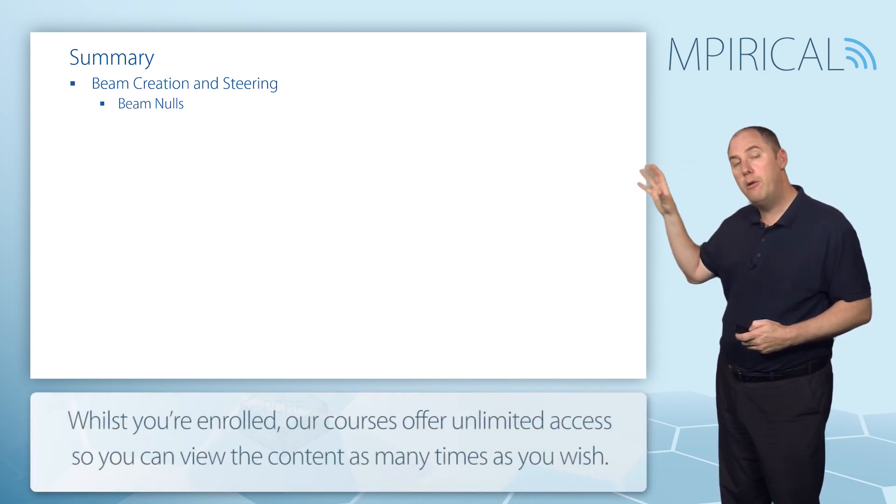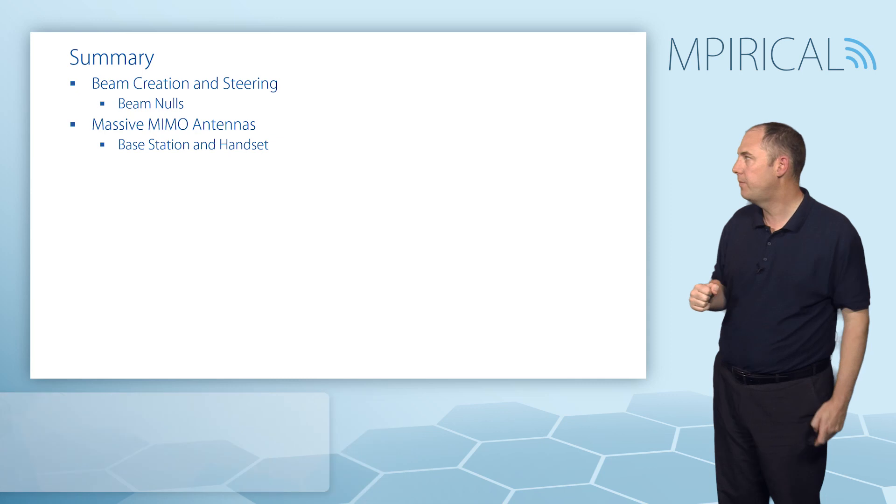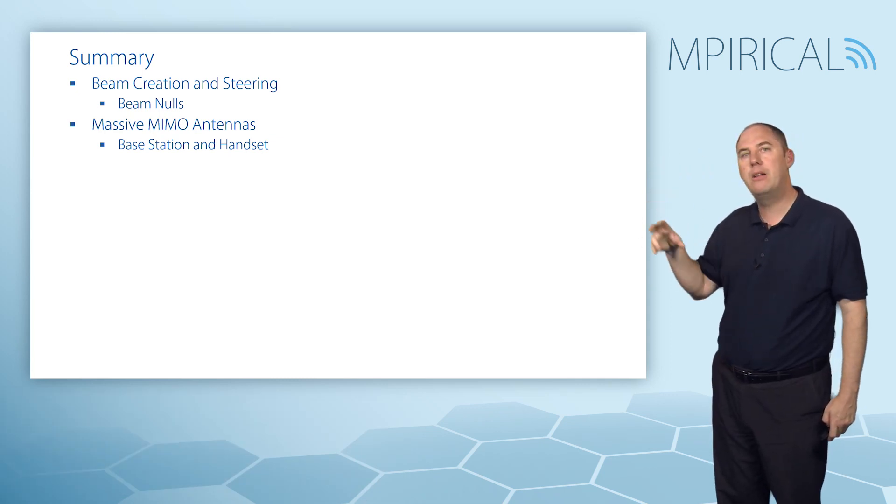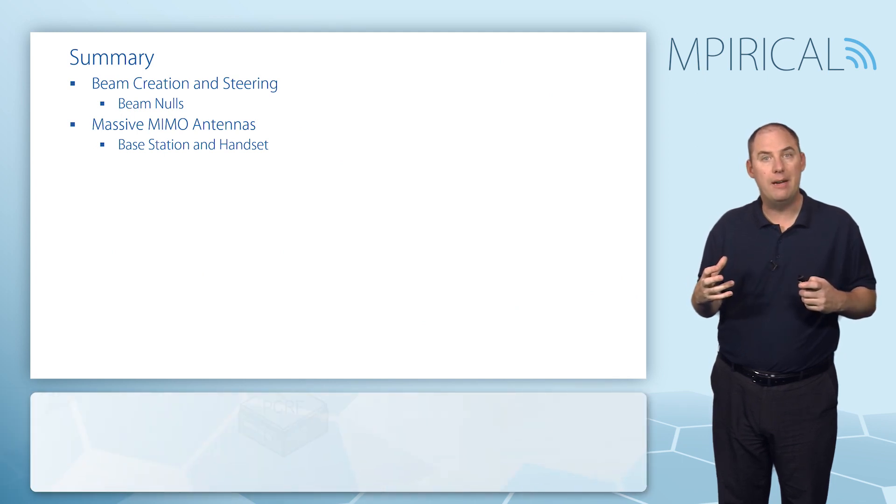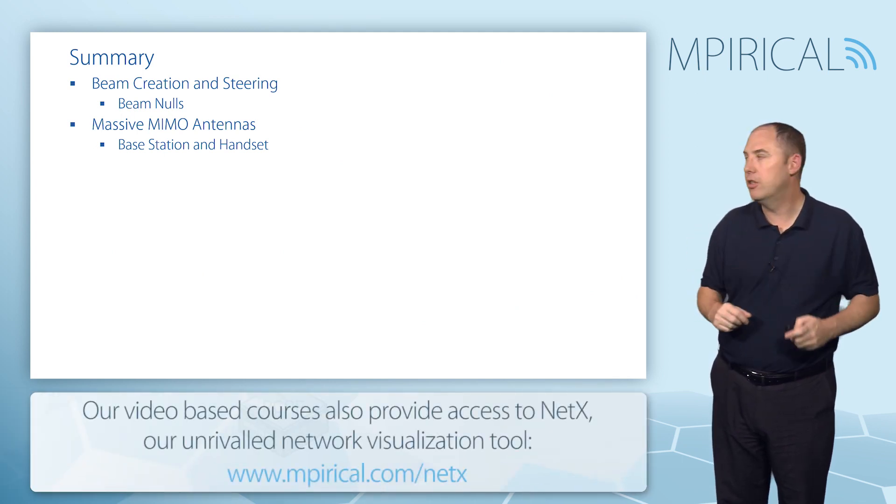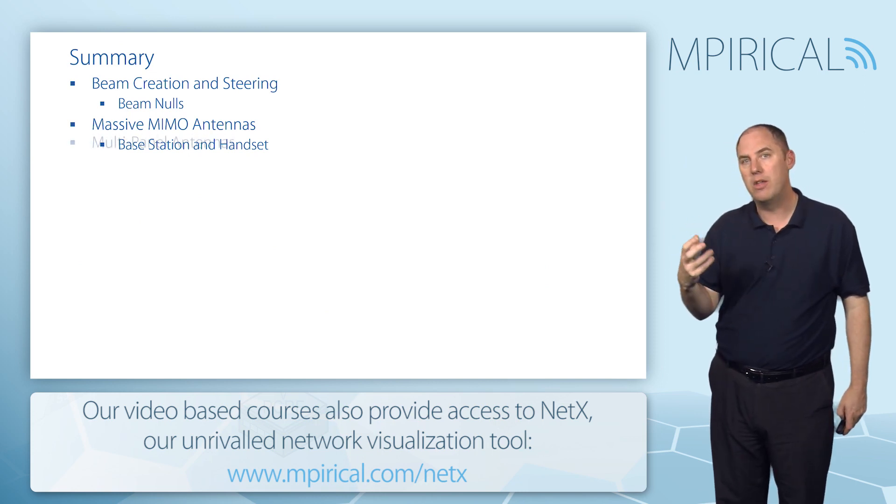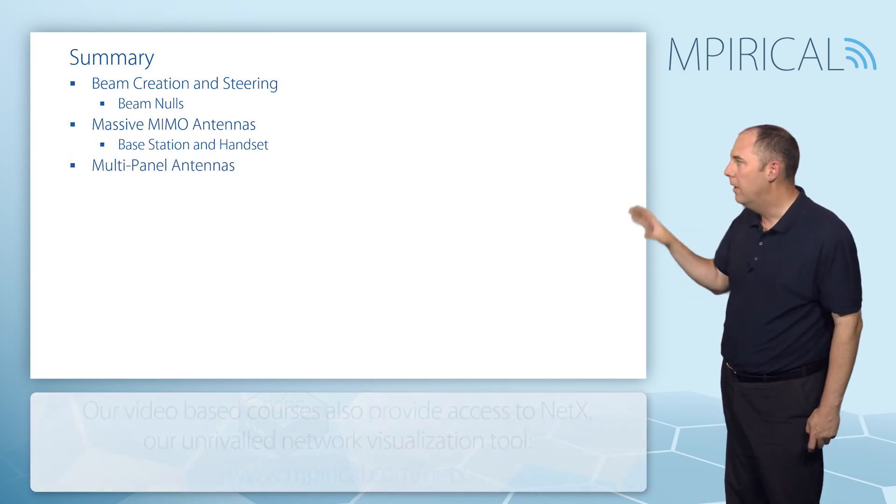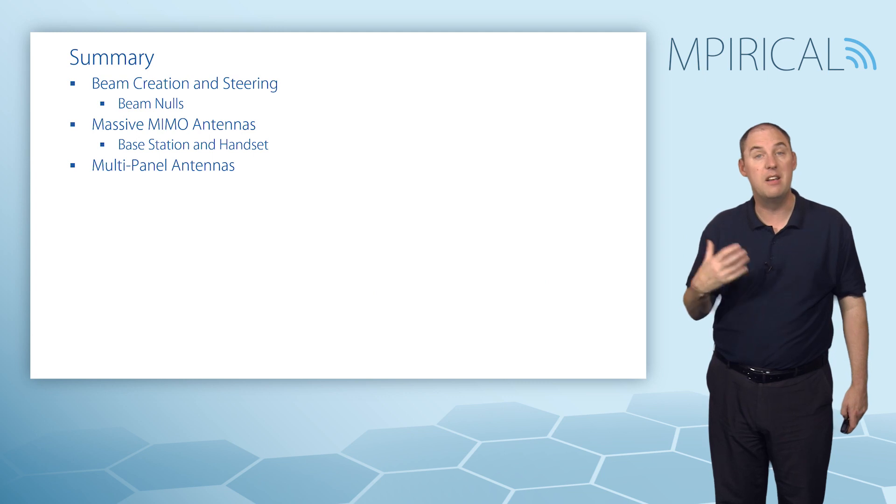So we've focused on how do we create a beam, how do you steer a beam, and also introduced the concept of null beams and null steering. We've identified that we have massive MIMO antennas, an array, and that array effectively enables you to pinpoint beams in certain directions. We've also identified that the handset, we have some issues with the RF modules as well. And finally, we just introduced that concept of single panel, multi-panel antennas and how they may be utilized in different ways.